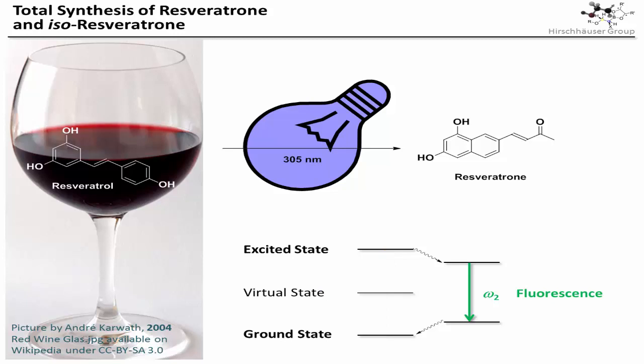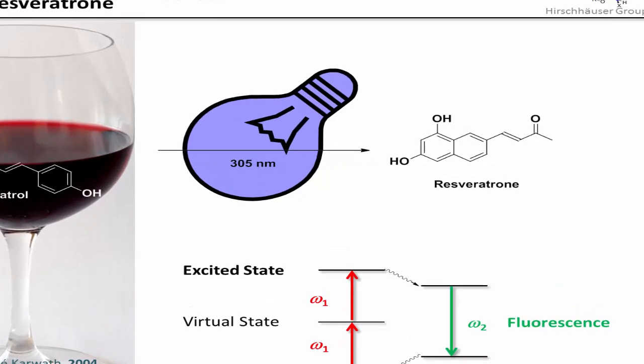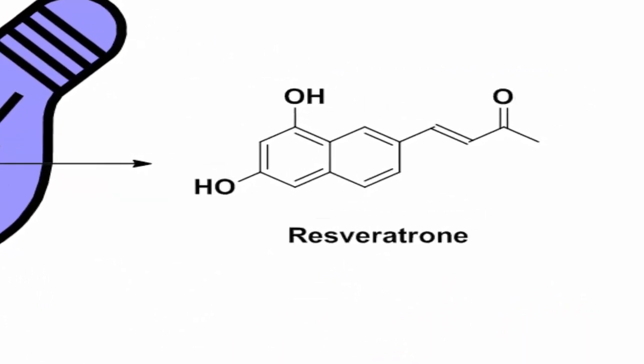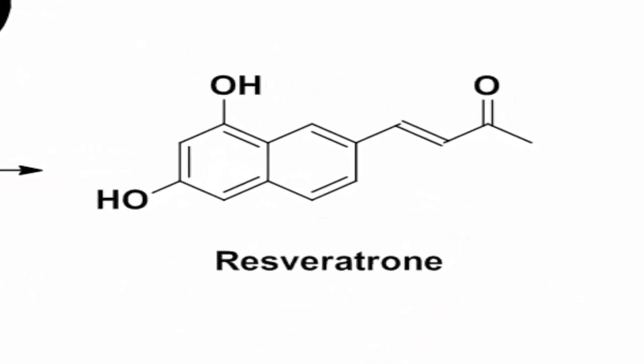Two-photon absorption, on the other hand, proceeds via a virtual state, which is kind of halfway between the ground state and the excited state. This means that a photon with less energy is required to reach this virtual state, but from it a second low-energy photon is enough to reach the excited state from which fluorescence can occur. So a longer wavelength can be used to excite molecules that allow for two-photon absorption, which makes resveratron an interesting candidate for a biological label.